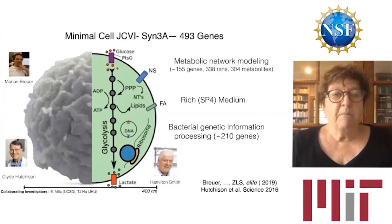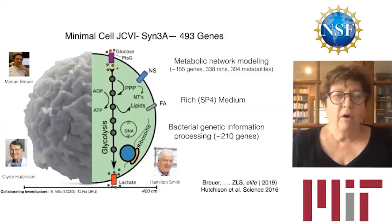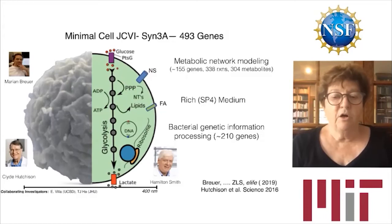The minimal cell is about 400 nanometers wide. It was developed by Clyde Hutchinson and Hamilton Smith's synthetic biology group at the J. Craig Venter Institute. My postdoc Marion Breuer worked with them to establish the metabolic network for all the essential enzymes. It has about 155 genes, 338 reactions, and 304 metabolites. The bacterial genetic information processing is very much like other bacteria, containing about 210 genes.